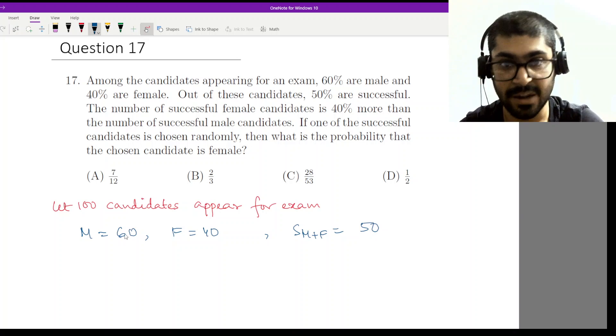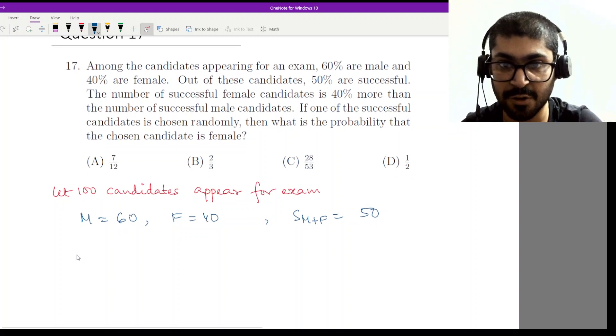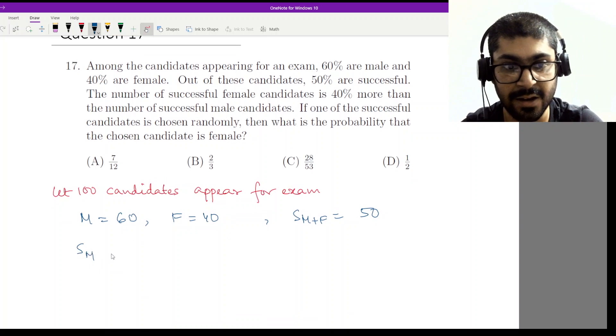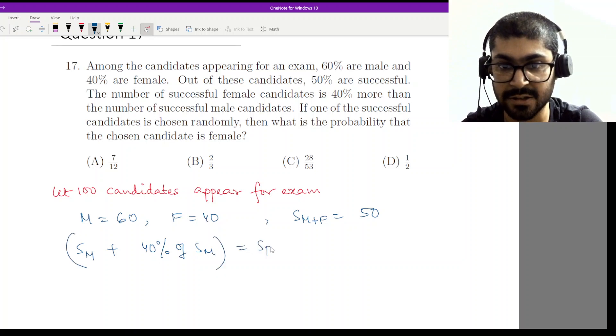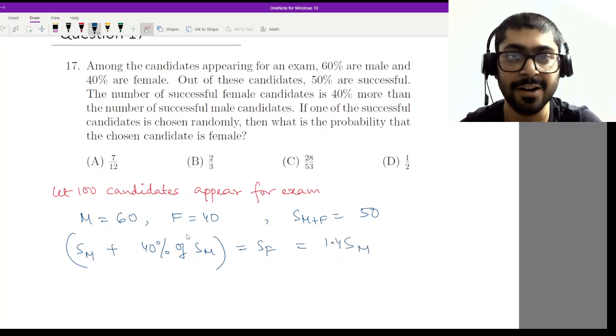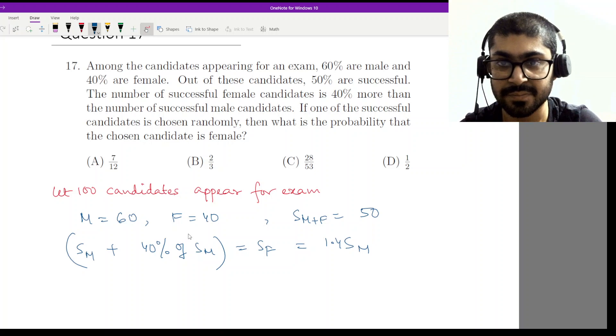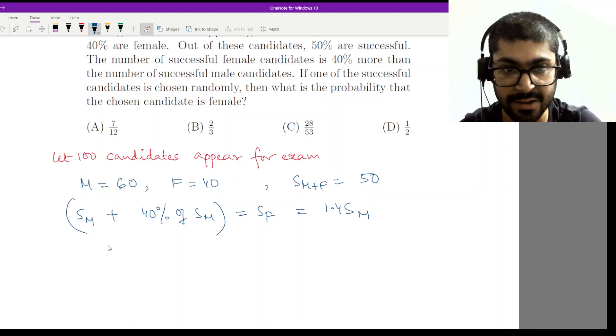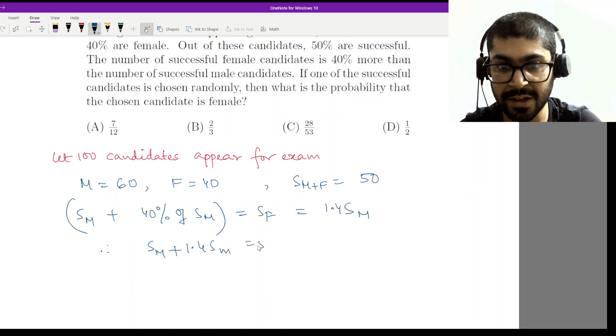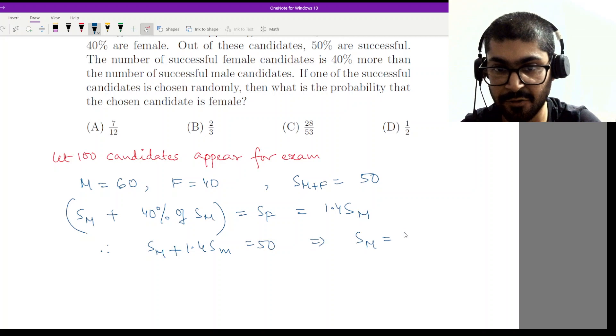Now the number of successful female candidates is 40 percent more than the successful male candidates. So successful males plus 40 percent of successful males, that will be equal to successful females. So it will be equal to 1.4 successful males. That should be equal to 50, because the total number of successful male and female is 50. Therefore I have SM plus 1.4 SM equal to 50, which gives me successful males equal to 50 by 2.4.